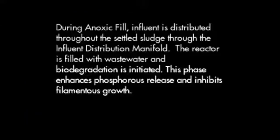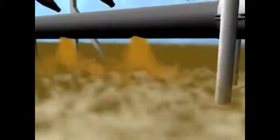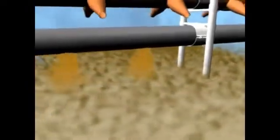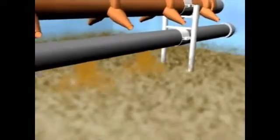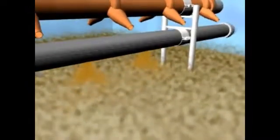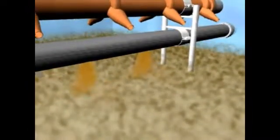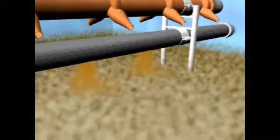During anoxic fill, influent is distributed throughout the settled sludge by our influent distribution manifold. The reactor is filled with wastewater and biodegradation is initiated. This phase enhances phosphorus release and inhibits filamentous growth.